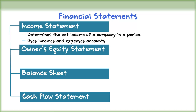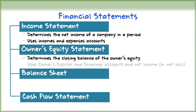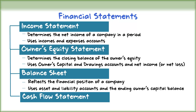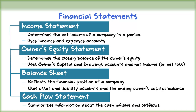The statement of owner's equity is prepared to find out the closing balance of the owner's equity. It is prepared by using the owner's capital and drawings accounts and the net income or net loss from the income statement. The balance sheet is prepared to know the financial position of a company. It is prepared from the asset and liability accounts and the ending owner's capital balance as reported in the owner's equity statement. A statement of cash flows summarizes information about the cash inflows or receipts and outflows or payments for a specific period of time.